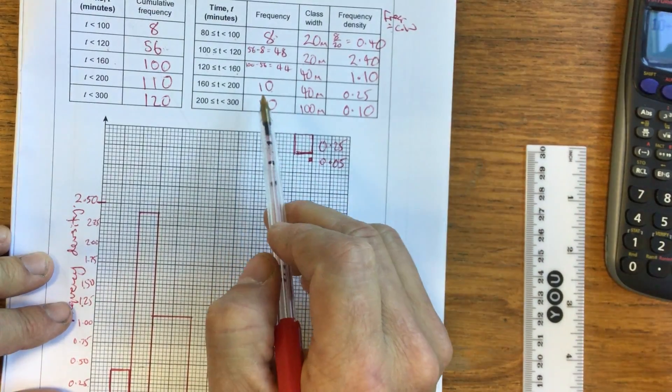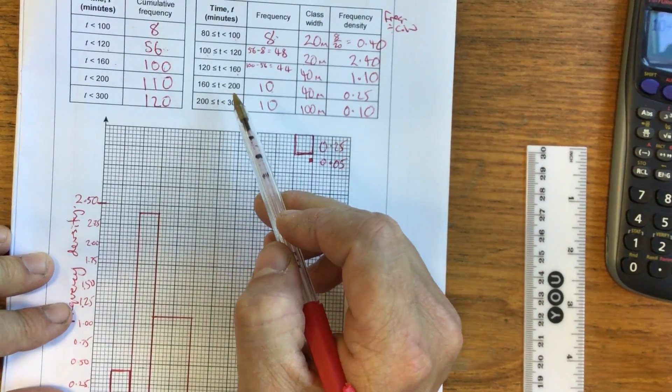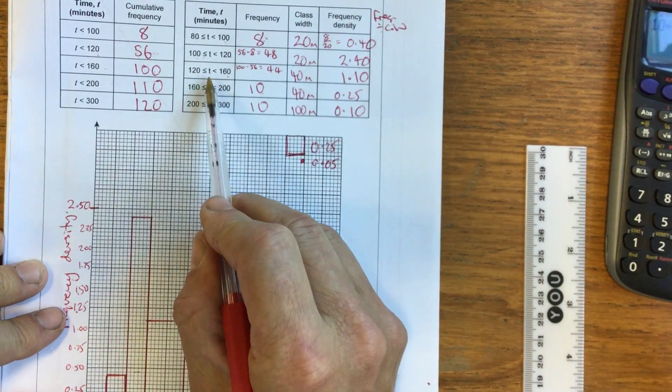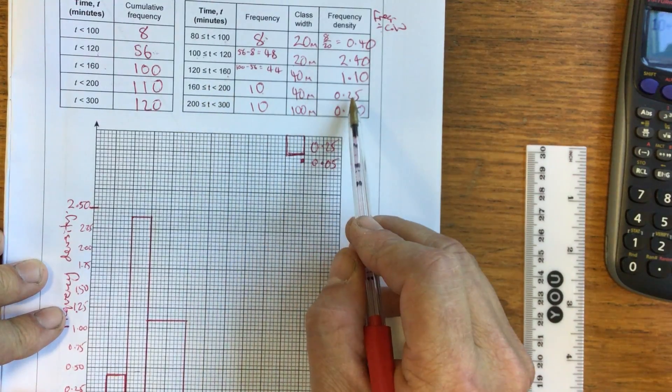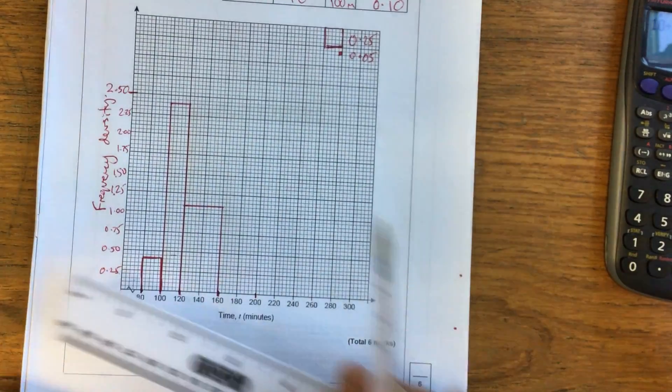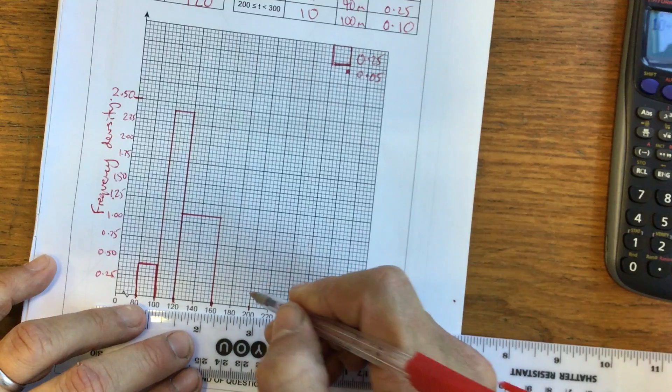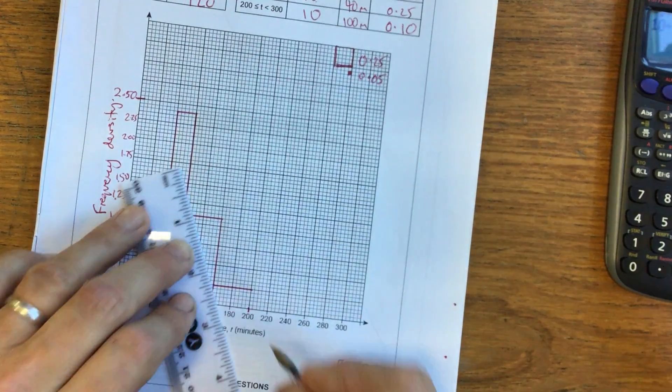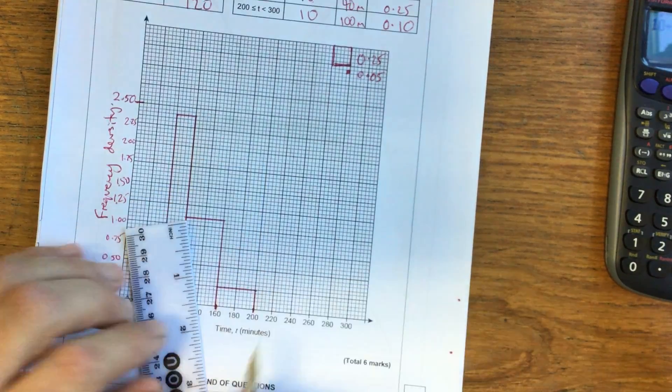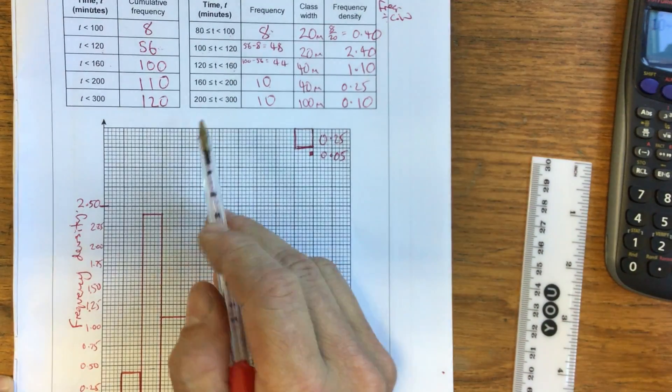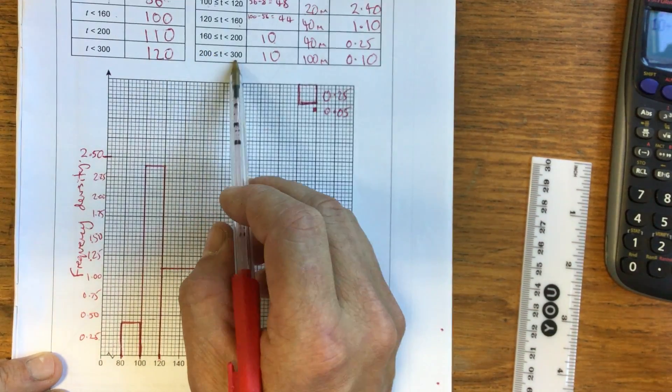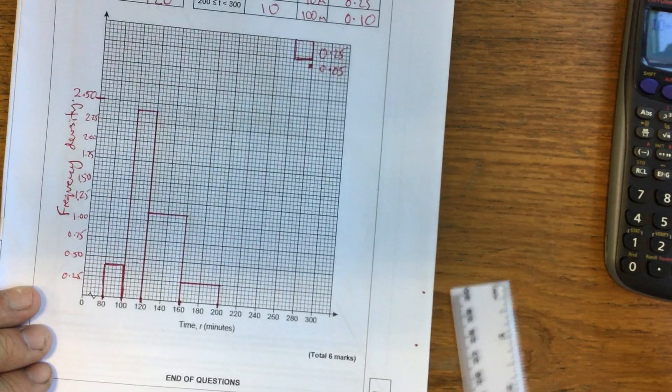So we'll just continue on. We've got 160 to 200, and the frequency density is 0.25. That one's on my scale already. 0.25 is here. Great. Final one. 200 to 300 is 0.1.